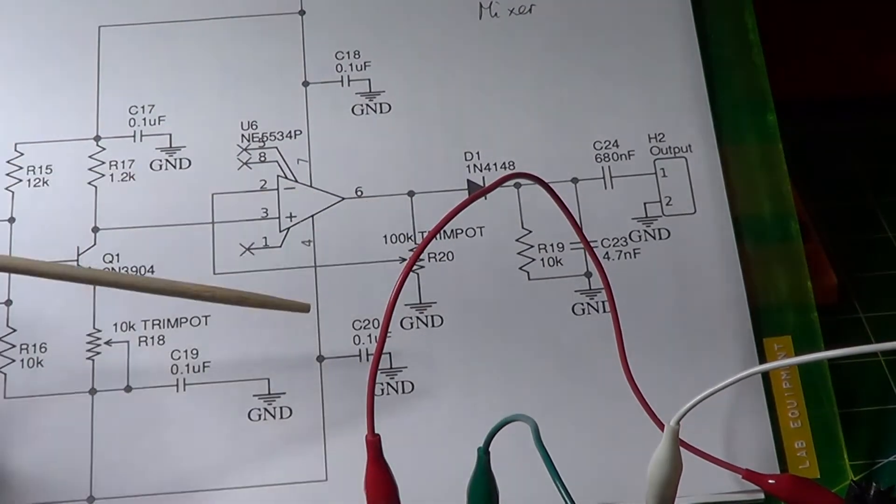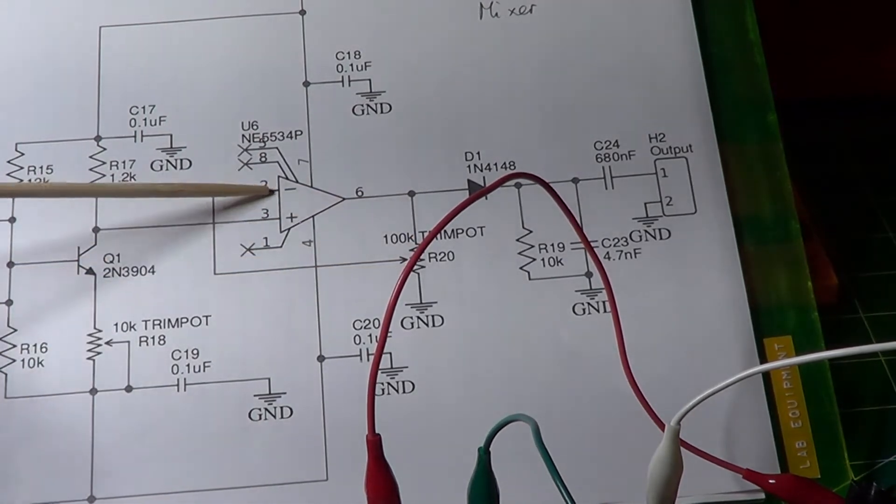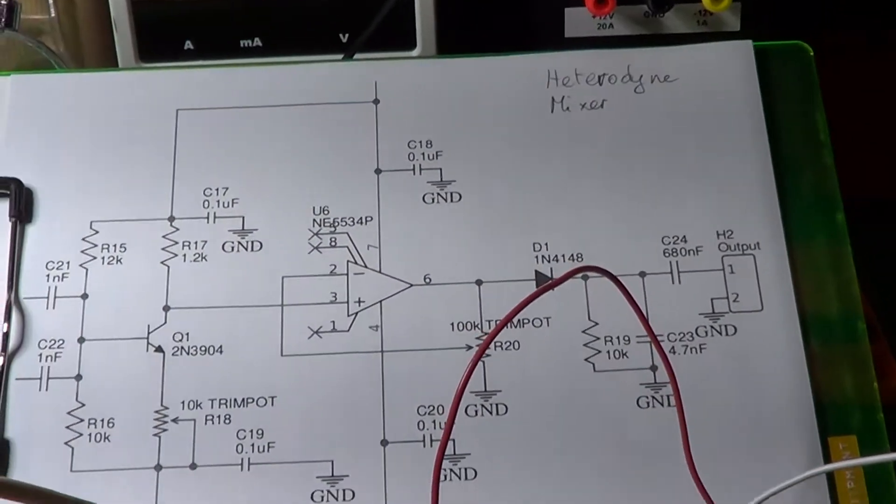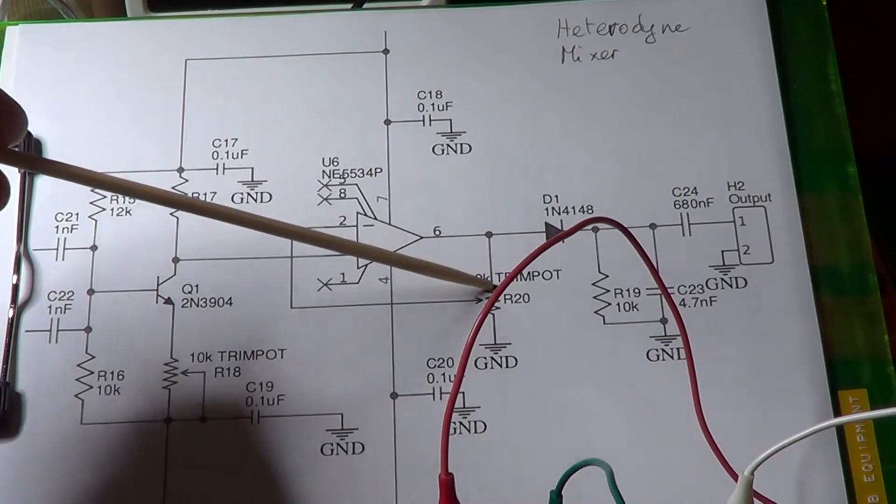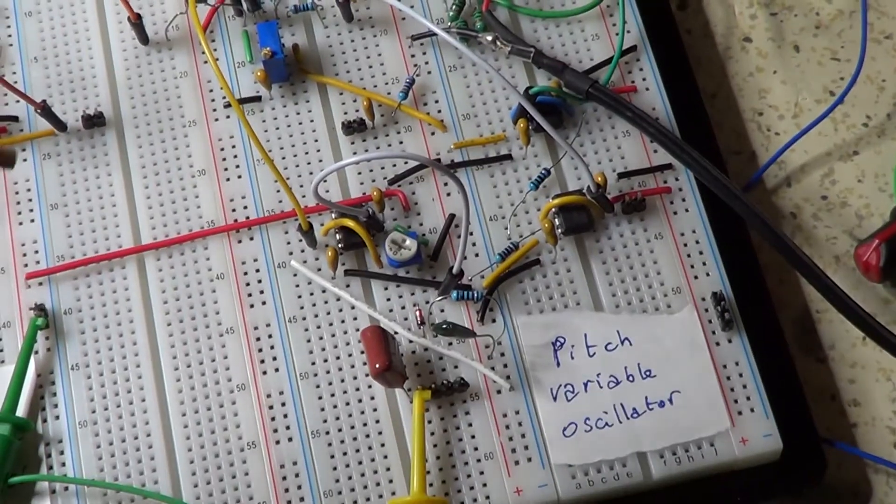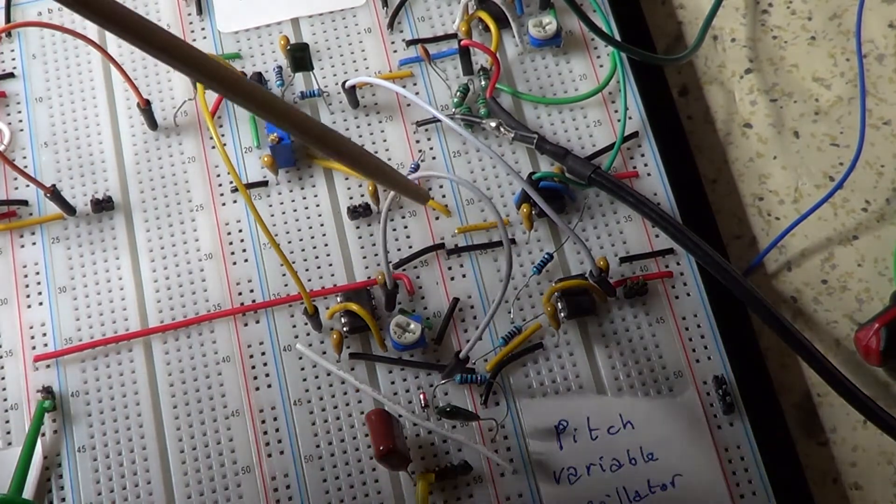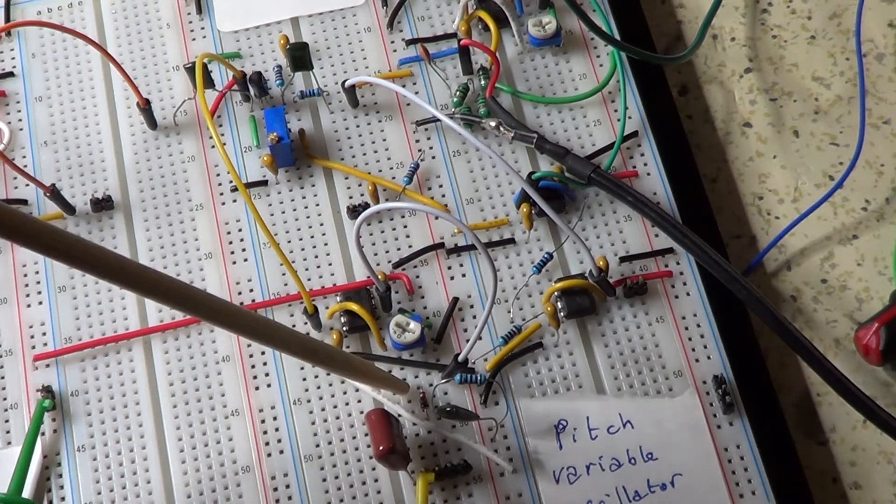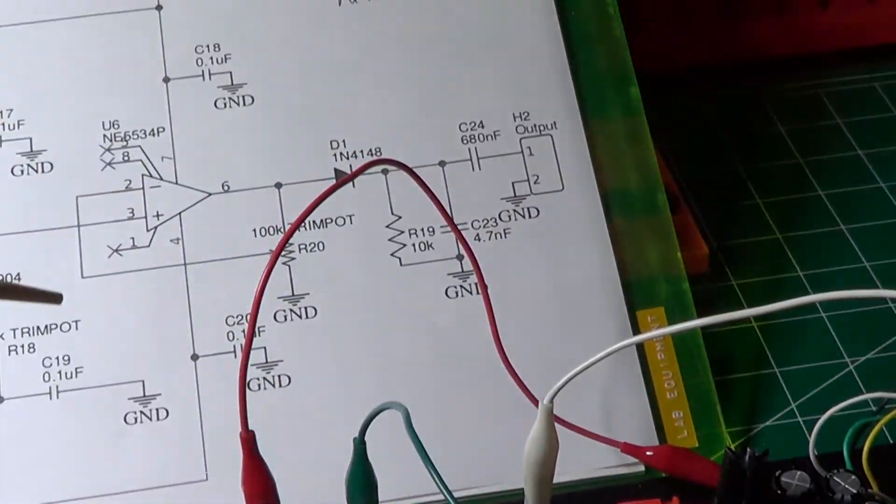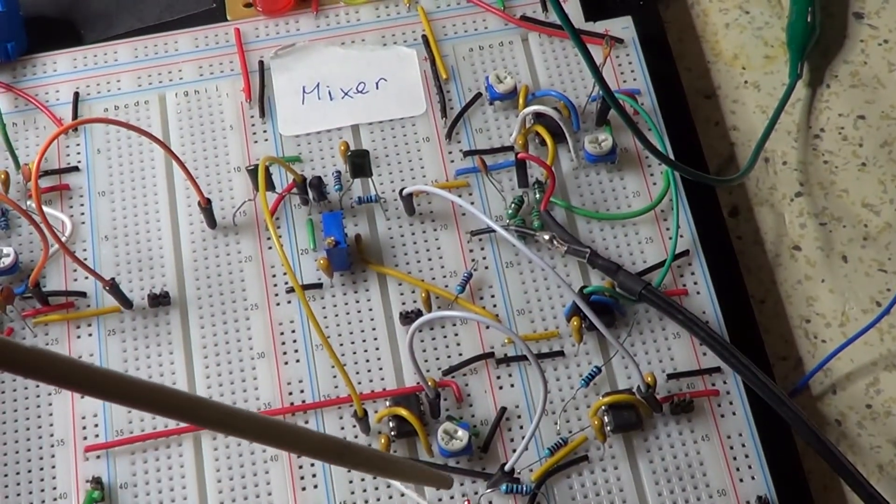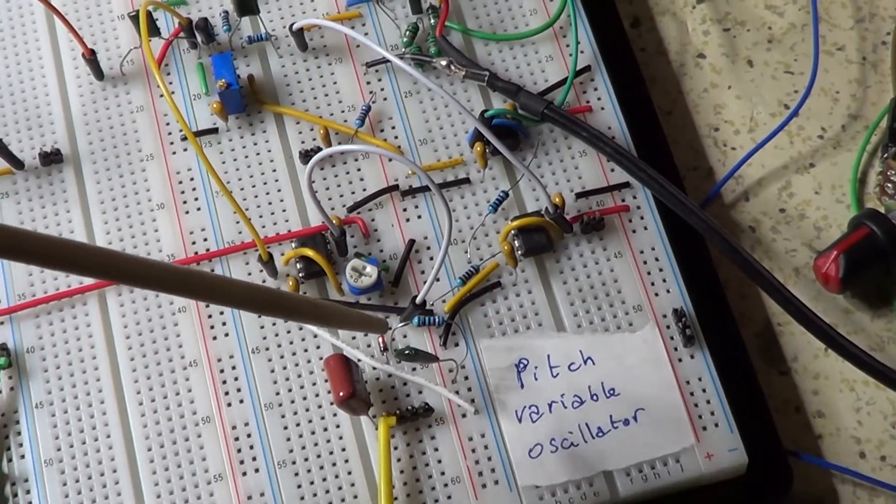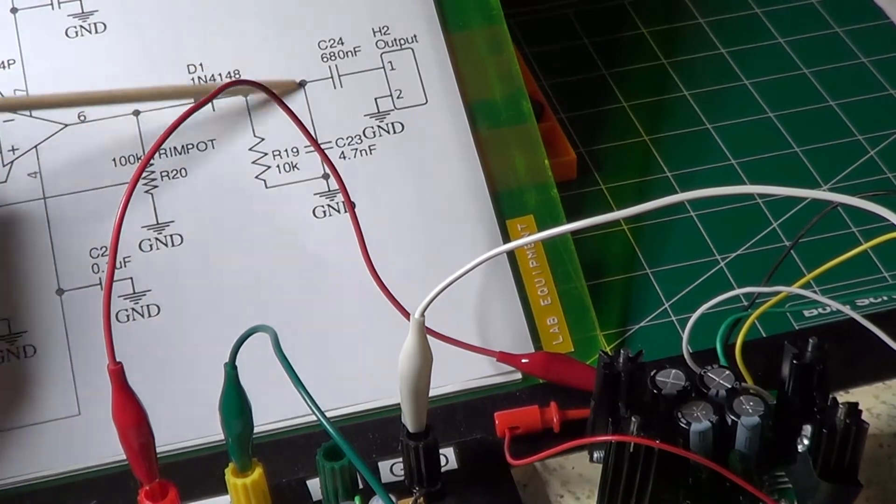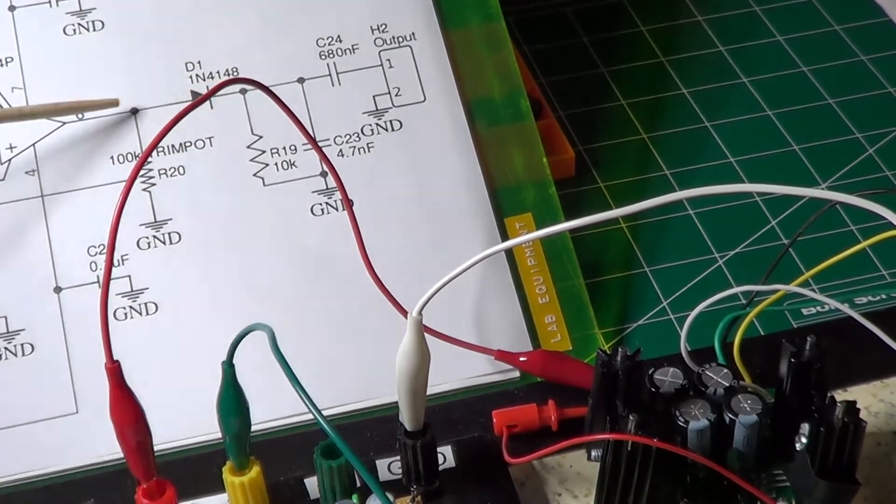And finally, there is the trimpot R20, which is connected between pin 6 and pin 2, and the other end is connected to ground. Here is the trimpot. This is the one that is used to fine tune the amplification of this stage. In fact, it goes from pin 6 back to pin 2. Now we have the output of the signal over here, which is taken on pin 6 through this cable, and goes directly to the anode of the diode D1, which is a 1N4148 right here. On the other side of the diode, there is this resistor and this capacitor, you can see here, which are basically R19 and R23, which constitute the low pass filter to clean up the high frequency from the signal that goes through the diode.